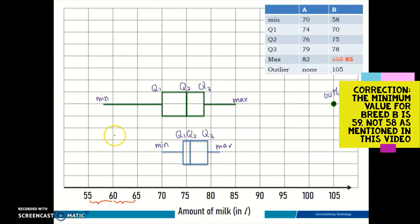You also need to label which box belongs to which data set. The first one is breed A, followed by breed B. This is a perfect box plot. We have successfully drawn two box plots on the same axis.